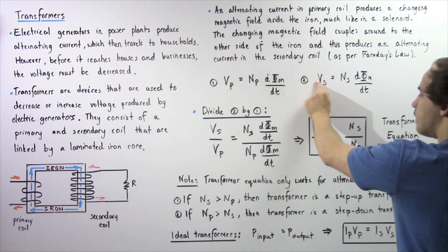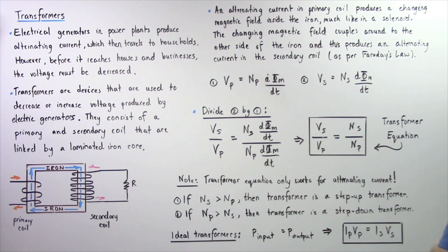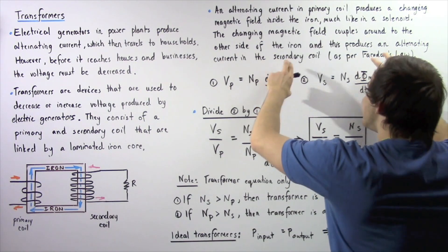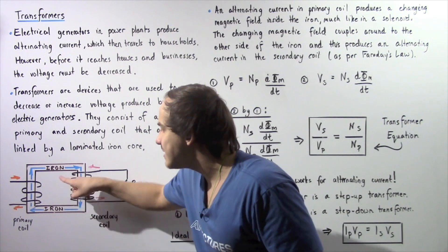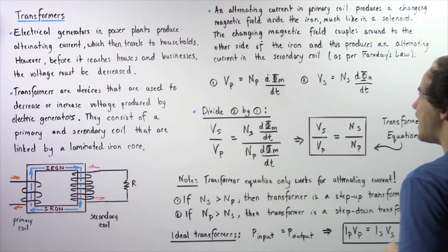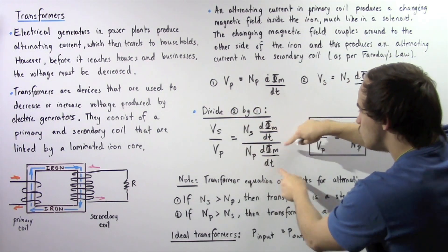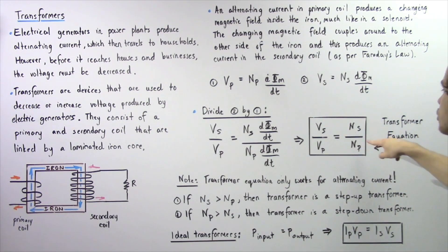Likewise, the secondary voltage VS induced on the secondary coil equals the number of loops on the secondary coil NS, multiplied by the rate of change of magnetic flux with respect to time. These two flux terms are exactly the same, because the frequency of the induced EMF in the secondary coil matches the primary coil. Taking the second equation and dividing it by the first, VS divided by VP, these flux terms cancel, giving us: VS/VP = NS/NP. This is known as the transformer equation.